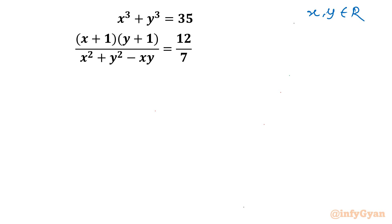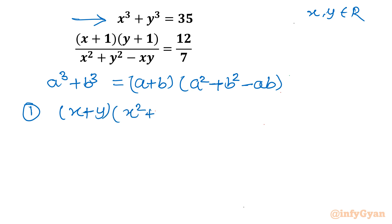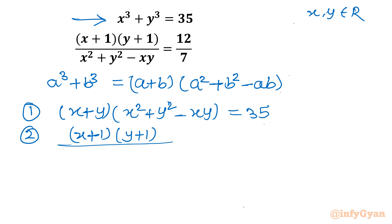Let's get started by writing the algebraic identity for a³ + b³, which equals (a+b)(a² + b² - ab). Applying this, equation 1 becomes (x+y)(x² + y² - xy) = 35, and equation 2 remains (x+1)(y+1) divided by (x² + y² - xy) = 12/7.